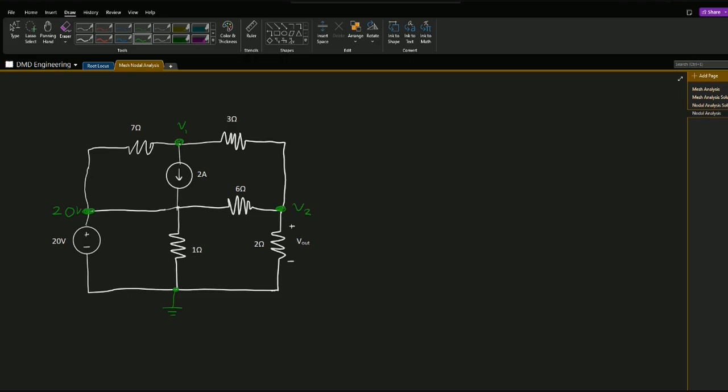For nodal analysis we need to know Kirchhoff's current law or KCL, and that says that the sum of all the currents in or out of a node is equal to zero. What I do is I define currents going out of a node as positive and going into a node as negative. I always draw all of my currents going out, and this way I can just keep everything positive and as long as I'm consistent everything works out.